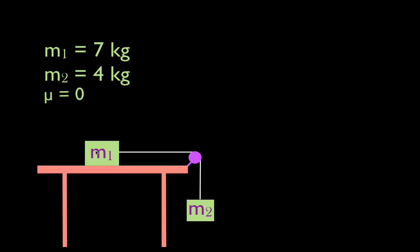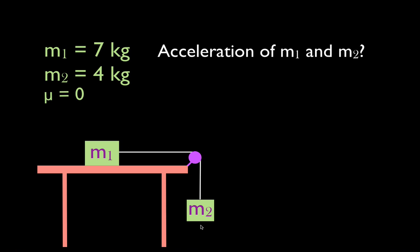We're holding m1, we release it and it's going to accelerate to the right. m2 is going to accelerate down. We want to know what is the acceleration of those two objects, and what is the tension in the string that connects those two objects.